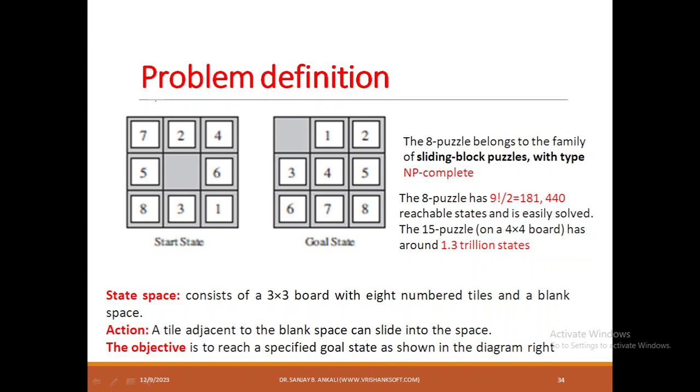The initial state is a 3×3 board with a random arrangement of 8 numbers and an empty tile. The goal state is to reach a sequence where all 8 numbers are arranged in order and the empty tile is at the beginning of the board, in the first row and first column.